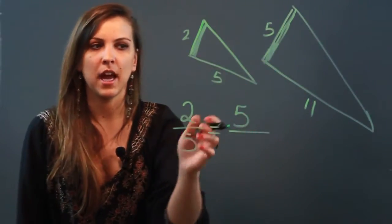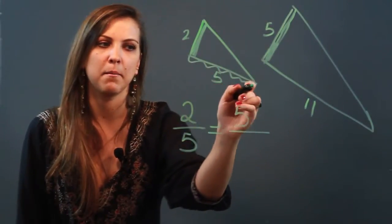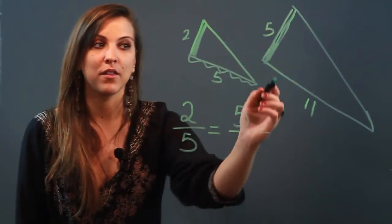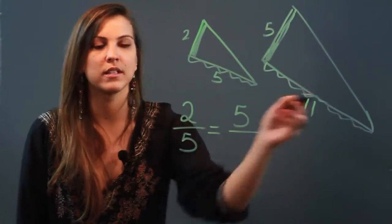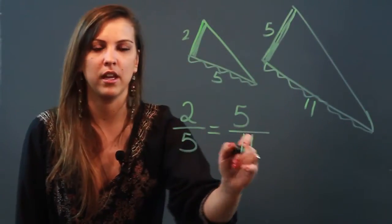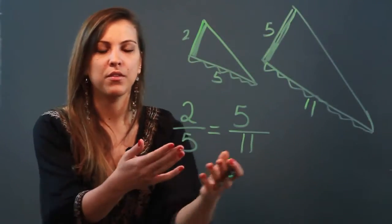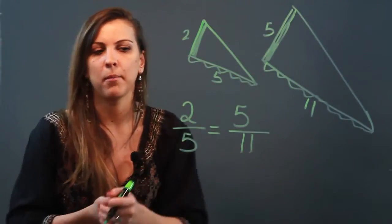And then for the denominator, because I have this bottom length right here, I'm going to have to write the corresponding side which is going to be 11 in the denominator here. And now I want to know, are these two ratios equal? Do they make a proportion?